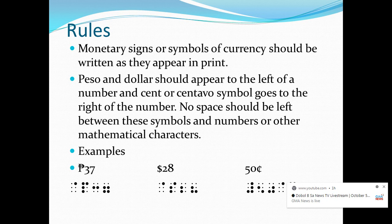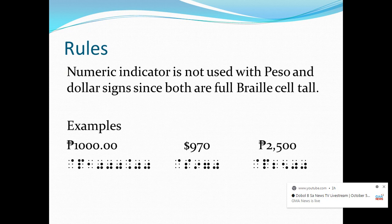Take note of the rules: monetary signs should appear as they are written in print — dollar and peso signs at the left of the numbers, and the cent sign at the right of the numbers — with no space between these signs and the numbers. Moving on to our next rule: the numeric indicator should not be used for peso and dollar signs, since these two signs are full Braille cell toll signs.